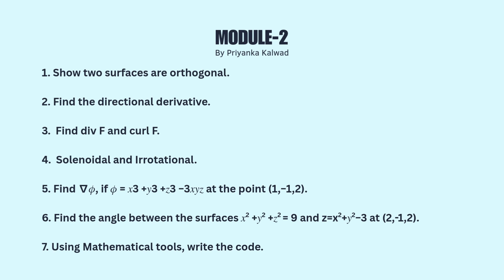In Module 2: First, show two surfaces are orthogonal. Second, find the directional derivative. Third, find divergence of a vector and curl of a vector. Fourth, solenoidal and irrotational. Fifth, find gradient — this is one example, there are many such problems. Sixth, find the angle between the surface — this is one example.